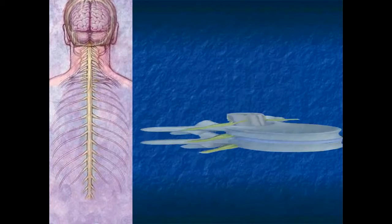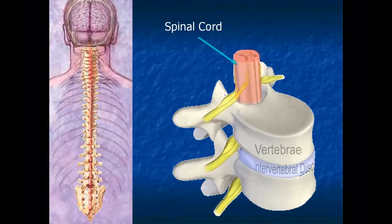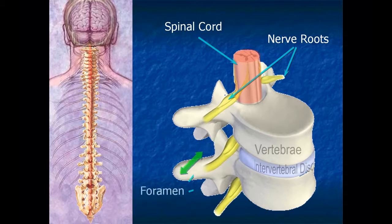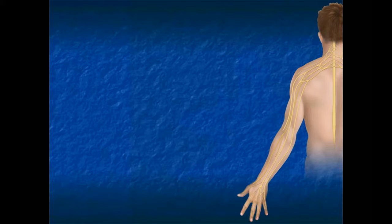The spinal vertebrae surround and protect the spinal cord as it extends from the base of the brain through the spinal canal to the base of the spine. There is one large nerve root extending off of the spinal cord between each vertebra on both the right and left sides. Vertebrae are shaped with holes or foramen to allow the nerve root to freely pass and exit between each vertebra. Every muscle in the upper extremity is supplied by the nerve roots that travel down the arm.